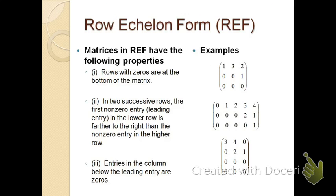Let's look at some properties of row echelon form, REF. Keep in mind when you are actually looking for a solution to a system, you want to make sure your matrix is either a coefficient matrix or an augmented matrix. We want an augmented matrix to actually find the solution. For these examples, we will not use an augmented matrix — we are just looking at the coefficient matrix.